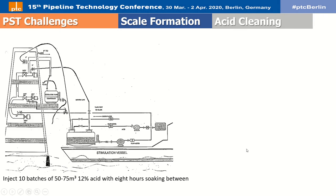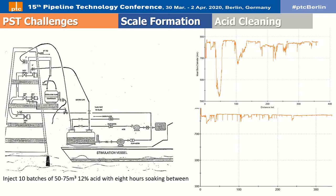To dissolve the scale, a massive acid cleaning operation was conducted by injection of inhibited hydrochloric acid between pigs using the pistoning technique, followed by acid withdrawal by depressurizing and subsequent neutralization by soda ash.